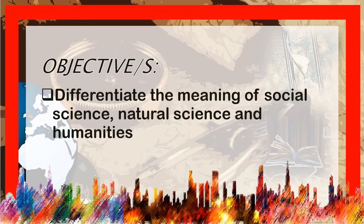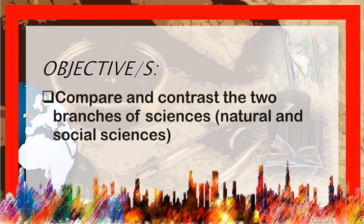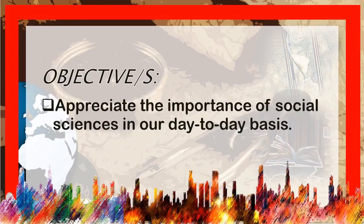Specific objectives are the following. First is to differentiate the meaning of Social Science, Natural Science, and Humanities. Second is to compare and contrast the two branches of Sciences, Natural and Social Sciences. And lastly, to appreciate the importance of Social Sciences in our day-to-day basis.